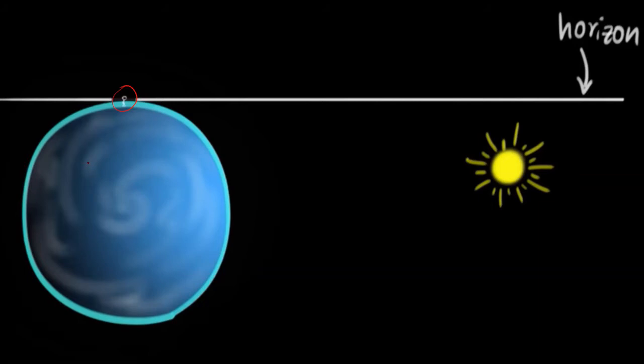The earth takes 24 hours to complete one rotation around itself. Early in the morning, around 5:30, before sunrise, consider this is the horizon — the largest distance that you can see. Until now the Sun has not risen, meaning the Sun is still below the horizon, but after some time you will see the Sun coming up.